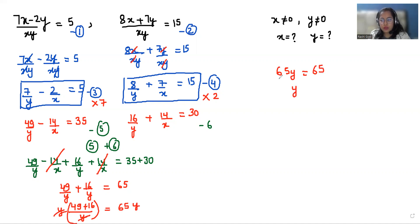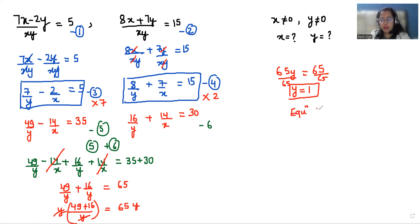Multiplying both sides by y to eliminate, we get 65y equals 65, so y is equals to 1. Now we can put the value of y in any of the equations. We'll substitute into equation number three: 7 by y minus 2 by x is equals to 5, with y equals to 1.